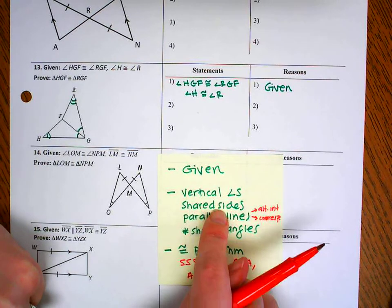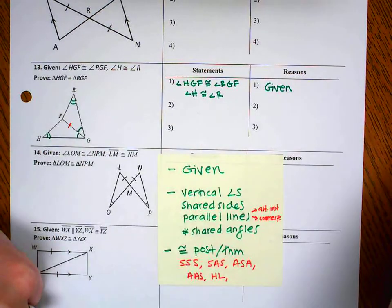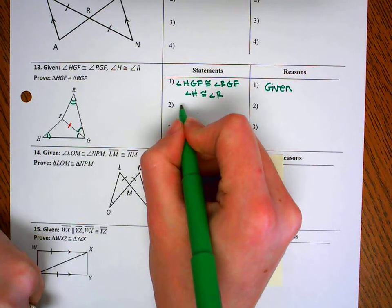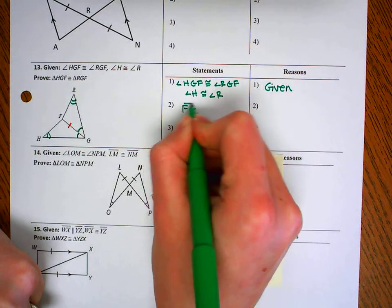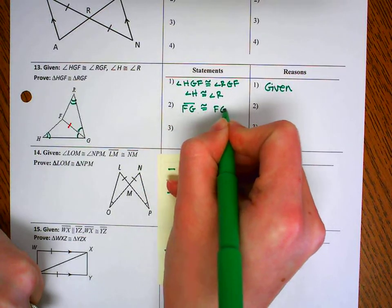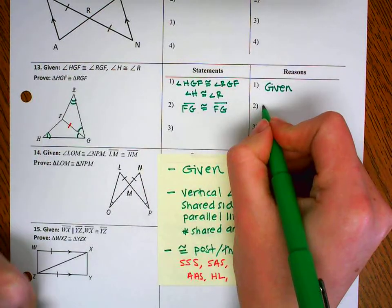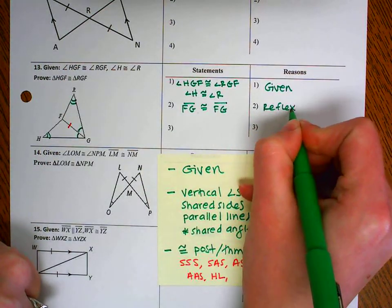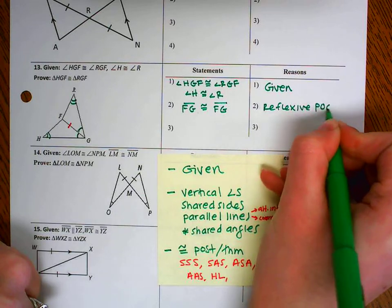Vertical angles, nope, we don't have any shared sides. Yes, we have a shared side. So let's add that to our proof. FG is congruent to itself, FG matches with FG. That's the reflexive property of congruence.